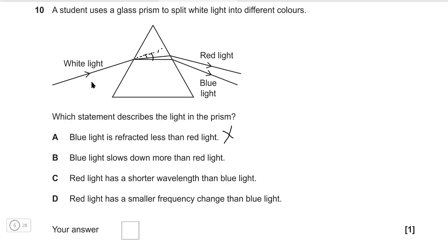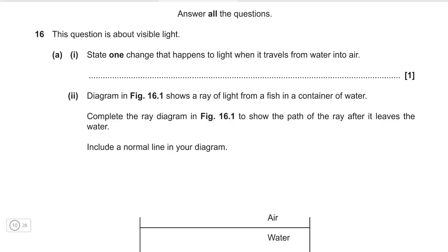Now the more something is refracted the more the light actually slows down because it has a high refractive index. So the correct answer in this case is actually B. Blue light slows down more than red light because it is refracted more. Okay next one.